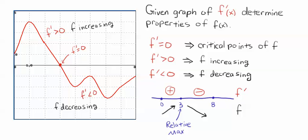And as I said, that means we have a relative max, and I'll just summarize in interval notation. f is increasing from zero to three, and f is decreasing from three to eight.